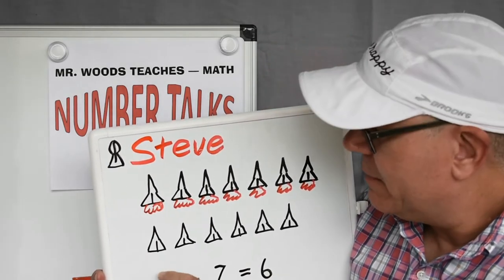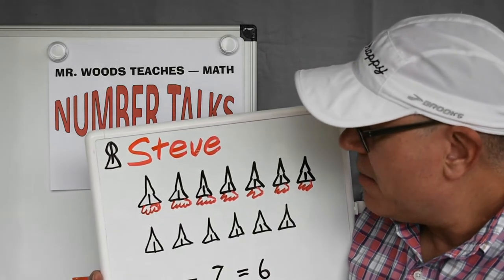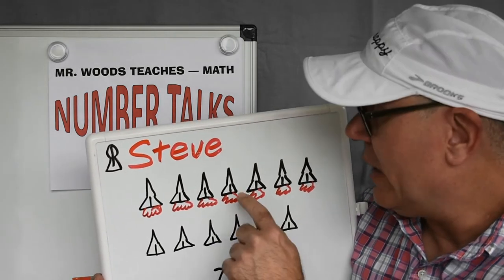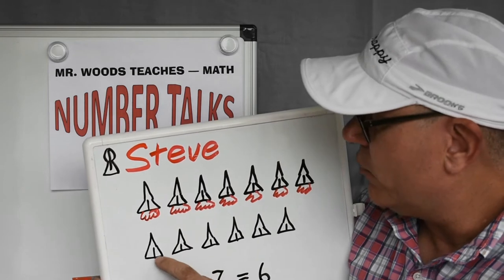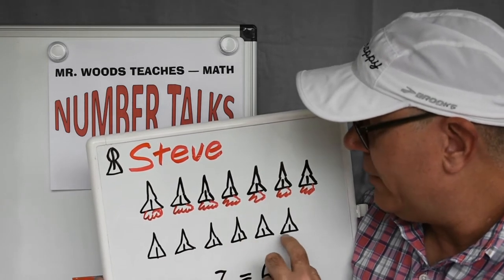So, since he lost them, we have a number here, minus seven, which is that seven, and now he has six. One, two, three, four, five, six.